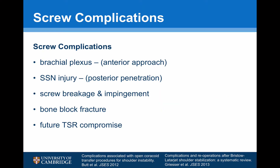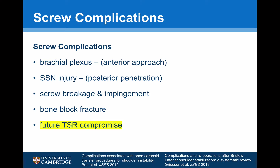One of the main issues with both bone block procedures and coracoid transfers are screw complications. They can cause compromise to the brachial plexus at the time of surgery, and there is potential damage to the suprascapular nerve with posterior penetration of the glenoid, as well as screw breakage and impingement. Sometimes bone block fractures do occur when tightening the screws. Another issue is that many patients with significant instability go on to develop osteoarthritis, and there may be problems down the line with total shoulder replacement and metal work in situ within the glenoid.